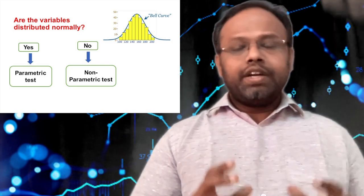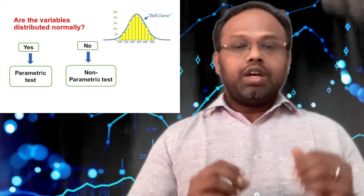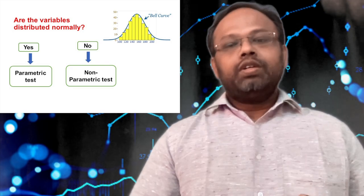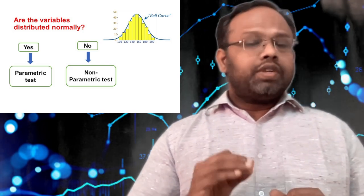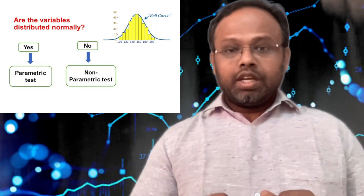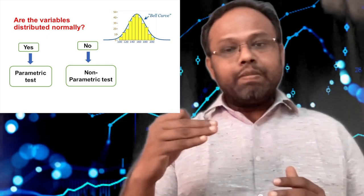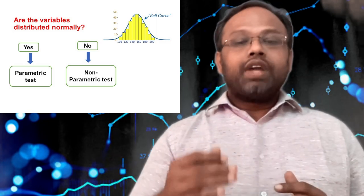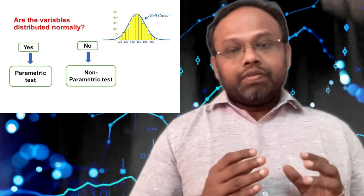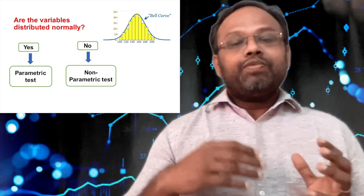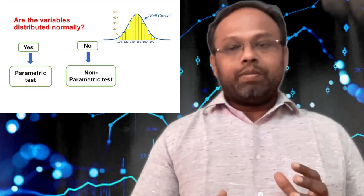Now the third question under numerical variable is: whether the data or the numerical data follows normal distribution or not? So this is your third question. For this third question, if your answer is yes, it is normally distributed, then all your statistical tests which you use will be parametric tests. And if the data is not normally distributed, then you have to go for non-parametric tests.